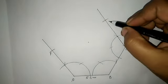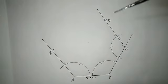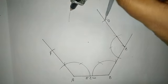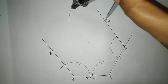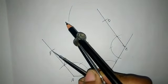We'll name it D. With D as center and 5 centimeters as radius, we draw an arc.